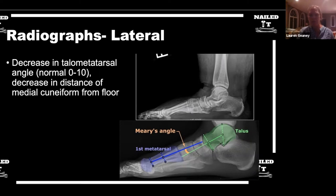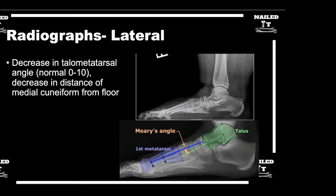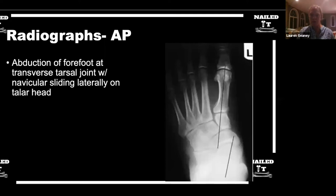On the AP view, you can also talk about the talonavicular first metatarsal angle, but what I like most — and I use it because it's most helpful for surgical planning — is how much uncoverage of the talar head there is. The navicular is supposed to be completely covering the talar head, but as the foot goes into abduction, the talar head becomes more exposed. The magic number is about 30 to 35% of the talar head uncovered, and that's how we differentiate 2A from 2B in the classification, which helps dictate surgical planning.